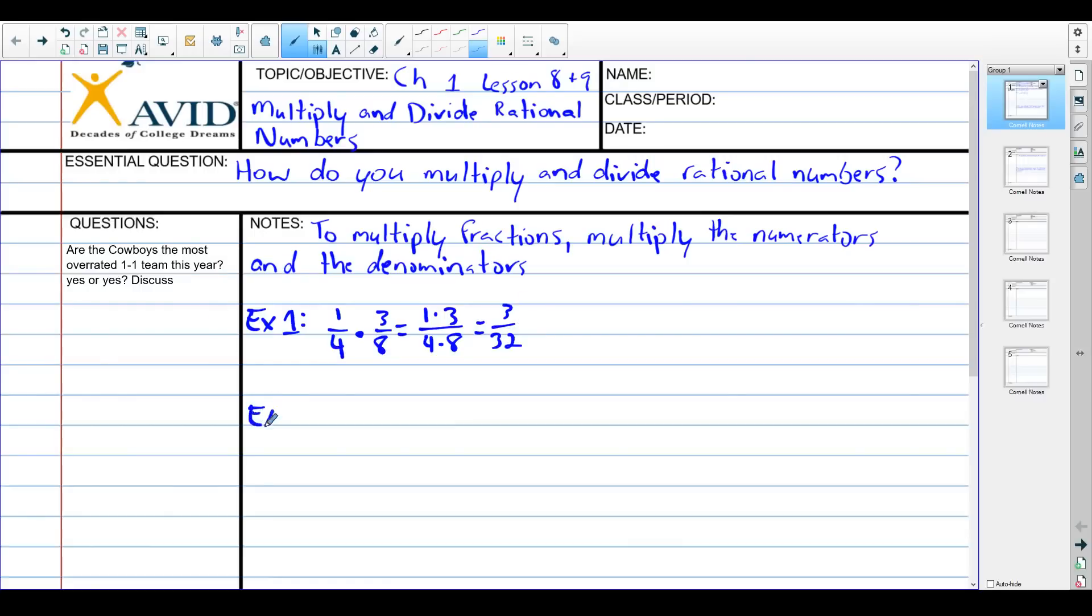Example two. This gets exceedingly more complicated in a couple seconds. What if we throw some negatives in there? This is not the complicated part. Two sevenths times negative one ninth. It's the same thing, go straight across. So negative two times negative one over seven times nine. On top, negative two times negative one is positive two. On the bottom, seven times nine is sixty three. We cannot simplify, so we're finished.